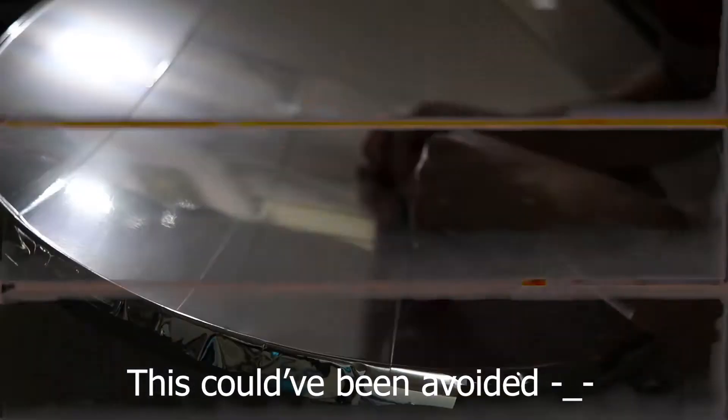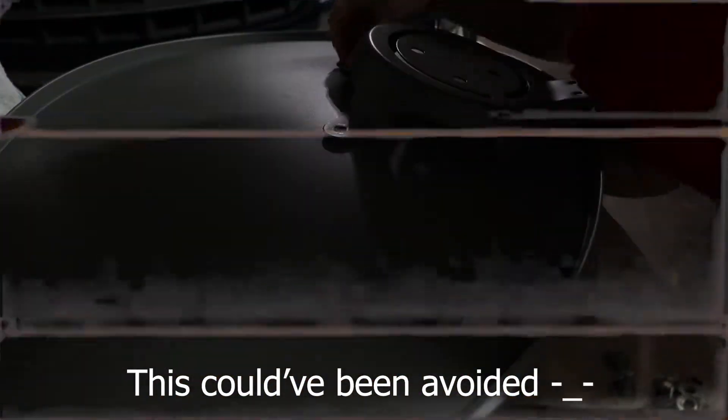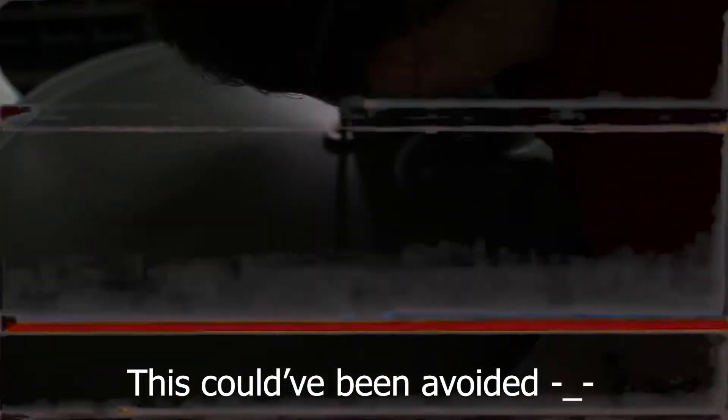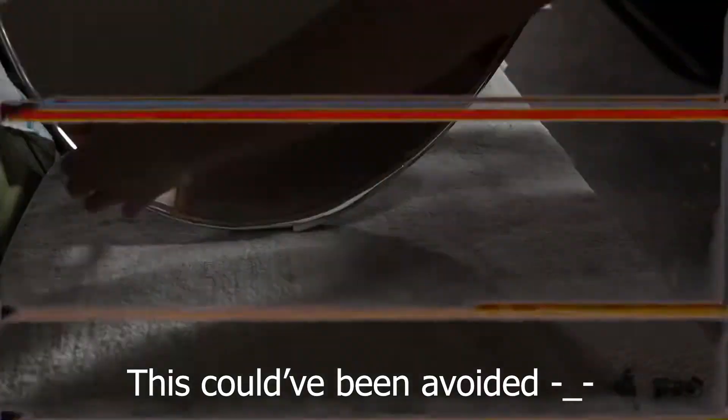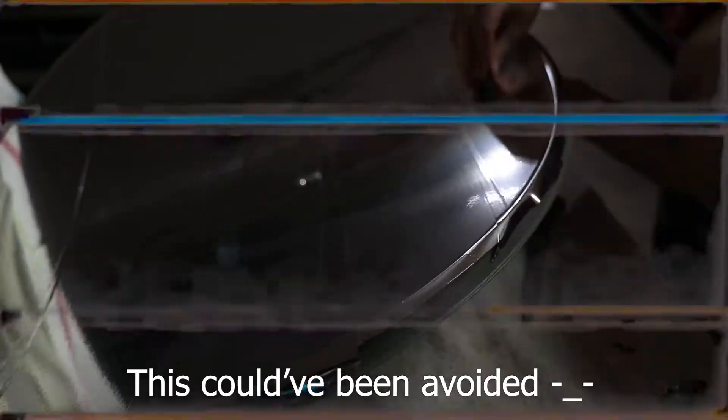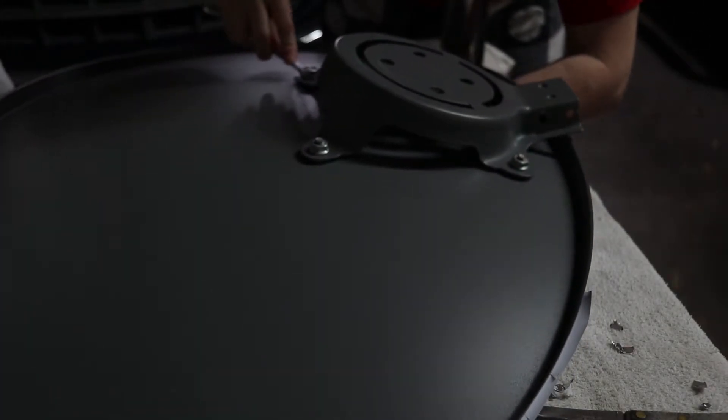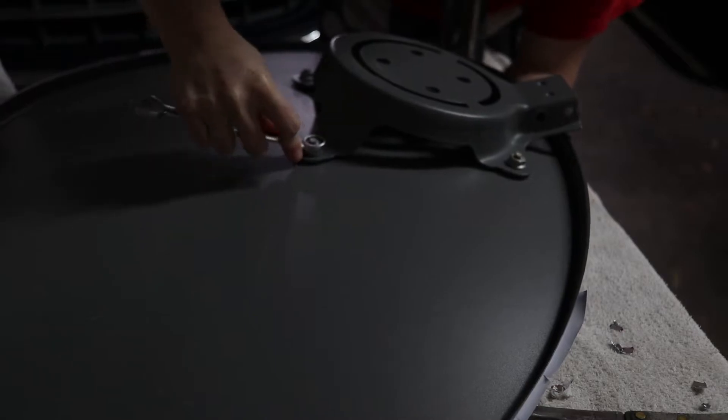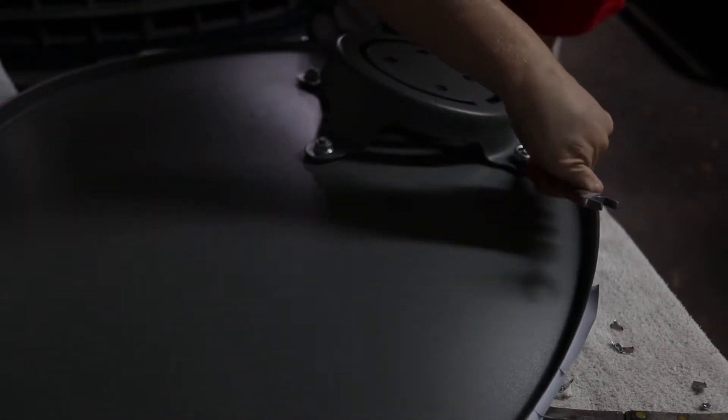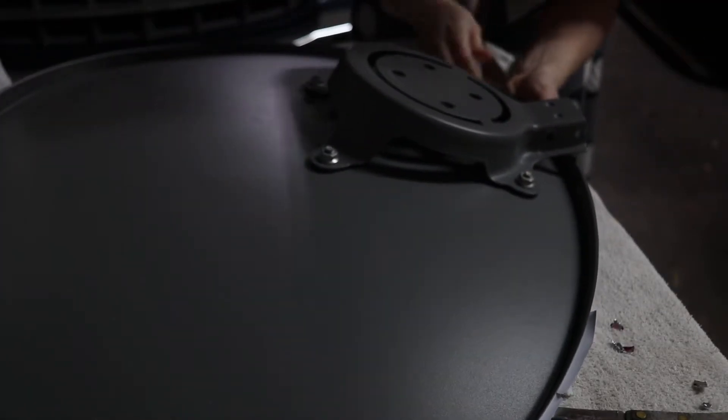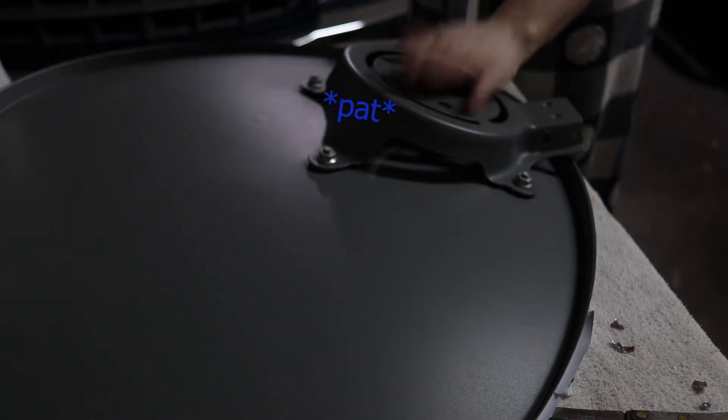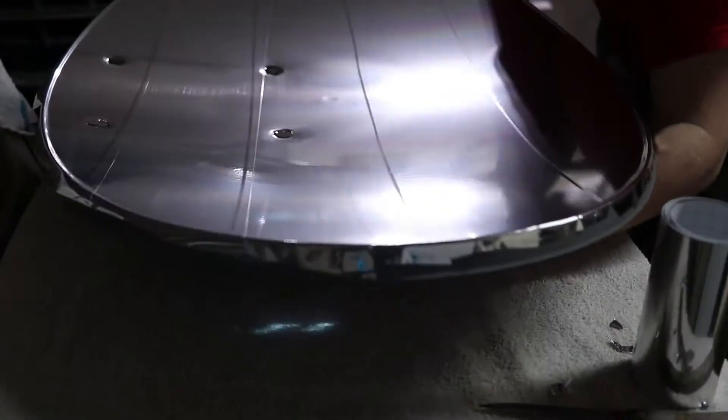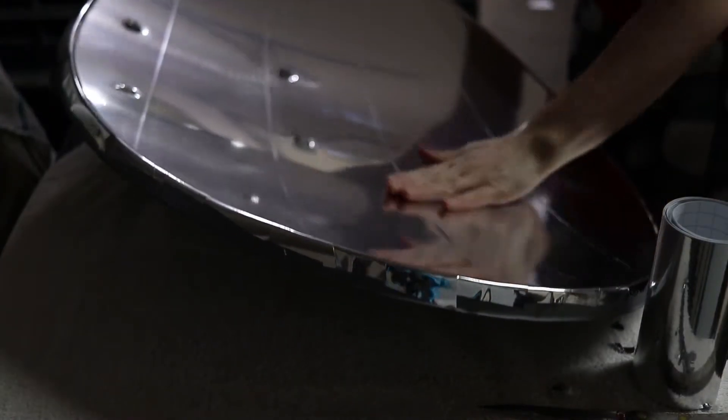Now this part could have been avoided. Because if I just put on the metal holder for the satellite dish before I put the film on, I wouldn't have to cut in it to make sure that I can screw it on. So if you want to avoid this, if you want to do this project, put this part on before you put the film on. It will save you like 20 minutes.